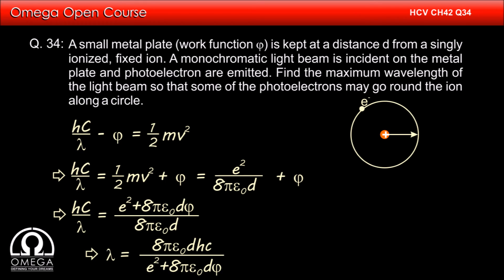Therefore, lambda is equal to 8 pi epsilon not d hc divided by e square plus 8 pi epsilon not d into phi. This is our answer.